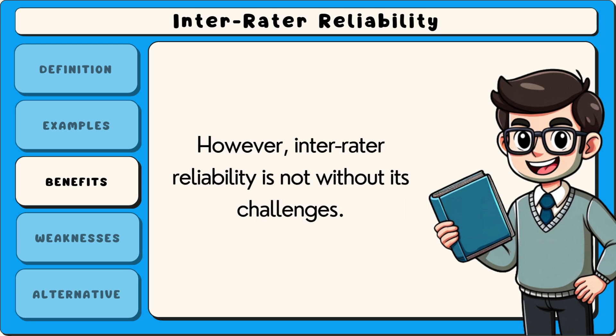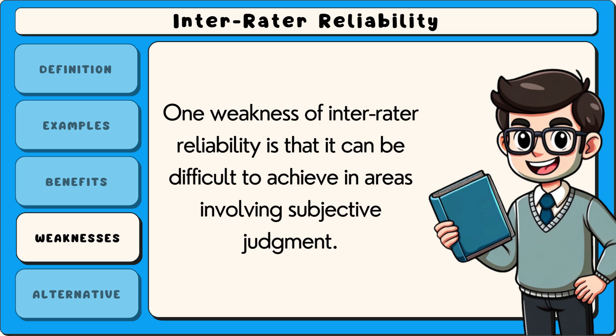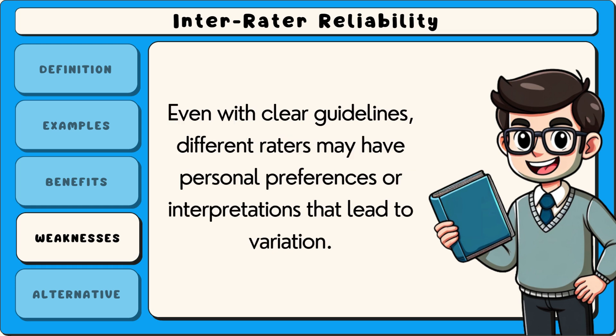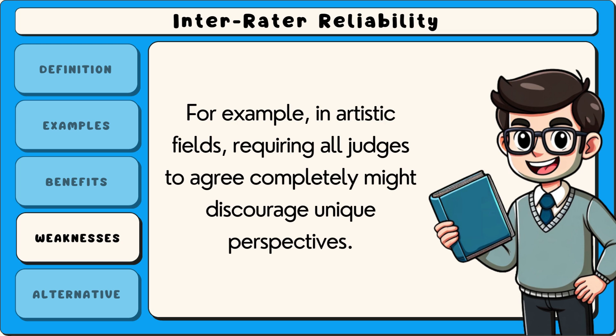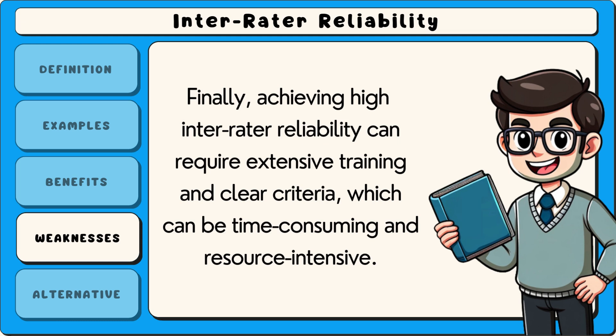However, inter-rater reliability is not without its challenges. One weakness is that it can be difficult to achieve in areas involving subjective judgment. Even with clear guidelines, different raters may have personal preferences or interpretations that lead to variation. Another issue is that enforcing strict consistency may limit creativity and flexibility. For example, in artistic fields, requiring all judges to agree completely might discourage unique perspectives. Finally, achieving high inter-rater reliability can require extensive training and clear criteria, which can be time-consuming and resource-intensive.